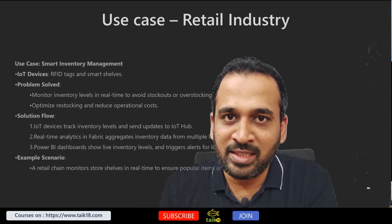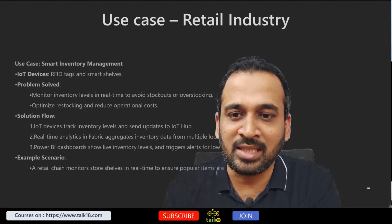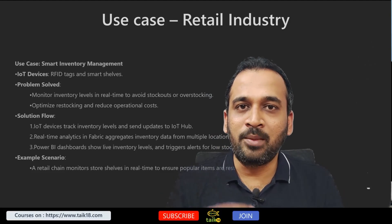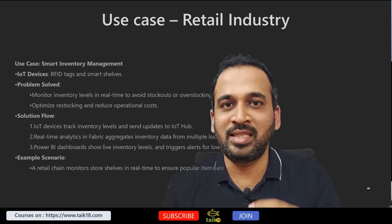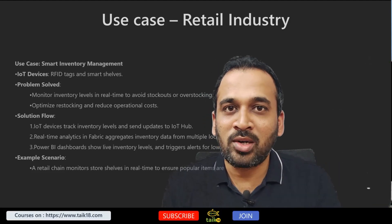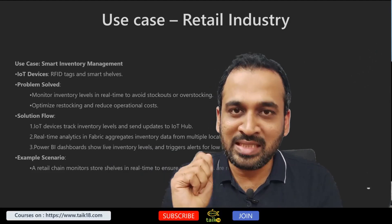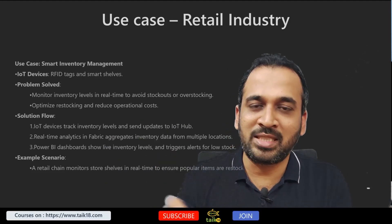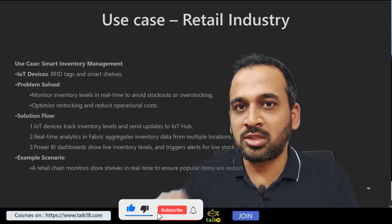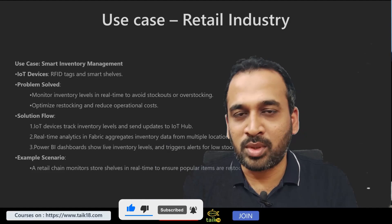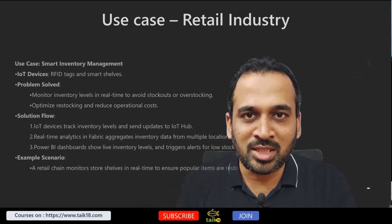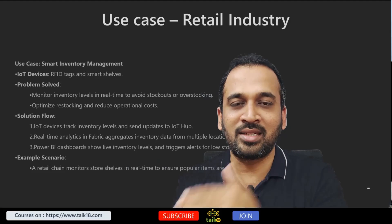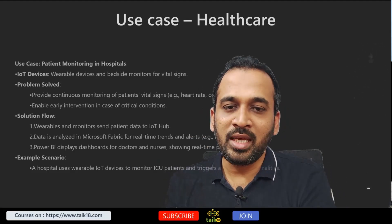In the retail industry, we have smart inventory management using RFID tags and smart shelves. This is useful when inventory is piling up on your rack and you want to maintain a reorder level — if stock goes below a threshold, you want it to trigger automatically and place a reorder in draft form. This saves time because you don't need to physically check each product on the rack. For a retail company with thousands of products, you can set thresholds so that an alert is sent automatically when something runs low, triggered directly from the system.